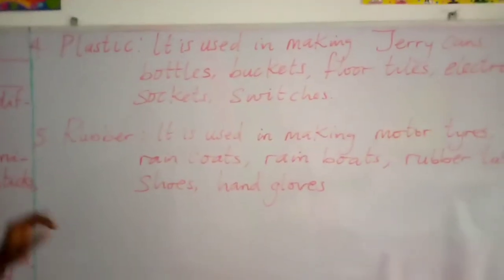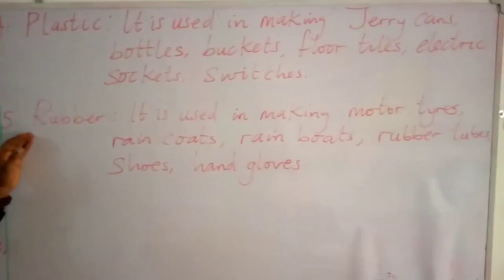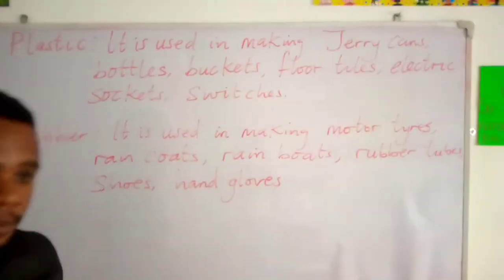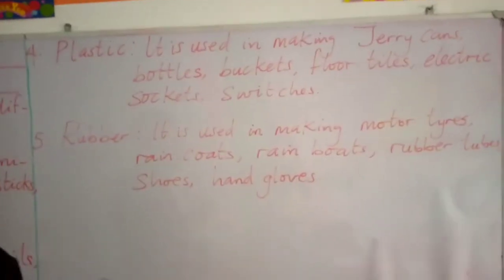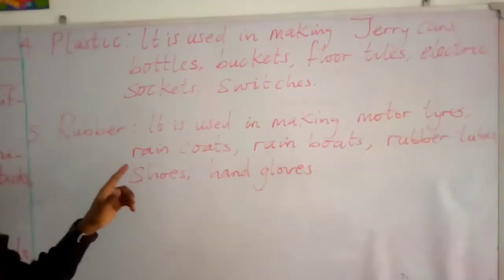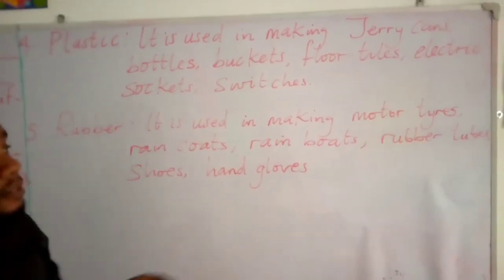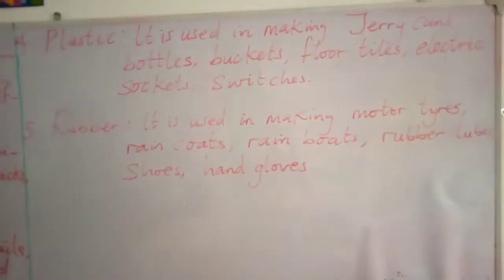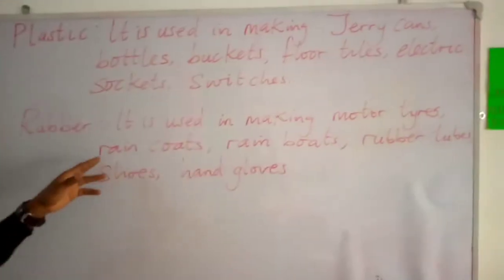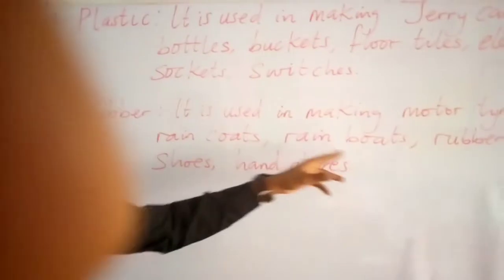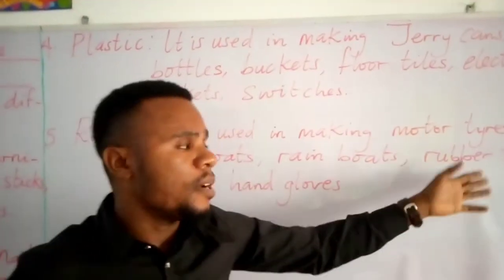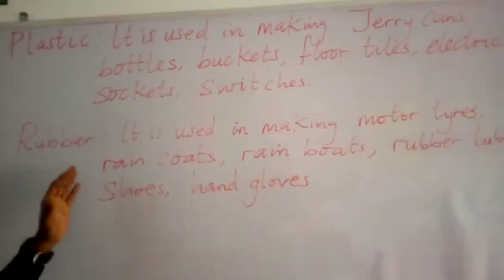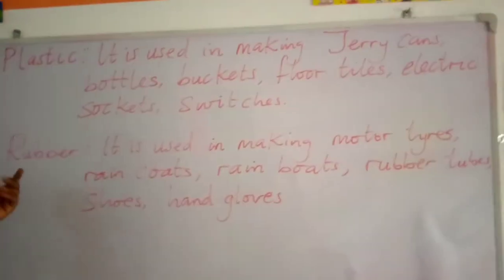Number five: rubber. Rubber is used in making motor tires, which are gotten from synthetic rubber because it is harder than natural rubber. We also have rain coats, rain boots, rubber tubes, shoes, and hand gloves. All these products are gotten from rubber.